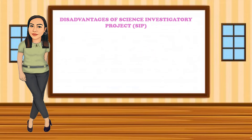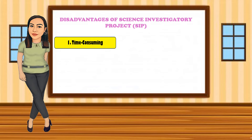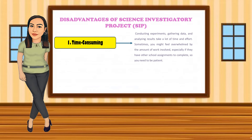Plus the disadvantages of science investigatory projects, or SIPs. First, SIPs can be quite time-consuming. Conducting experiments, gathering data, and analysing results take a lot of time and effort. Students might feel overwhelmed by the amount of work involved, especially if they have other school assignments to complete. So you need to be patient. Second, experiments can fail — sometimes your experiment doesn't work the way you expected, which can be frustrating.